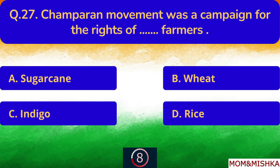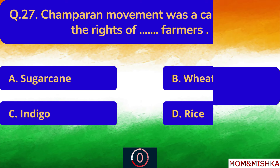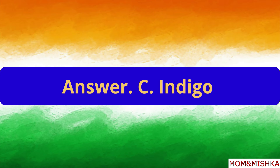The Champaran movement was a campaign for the rights of blank farmers. Indigo farmers. Option C.